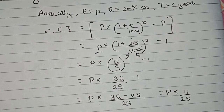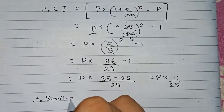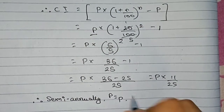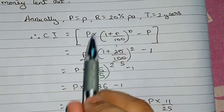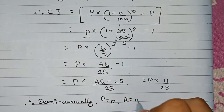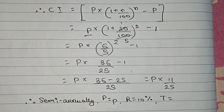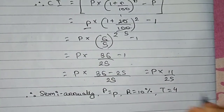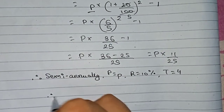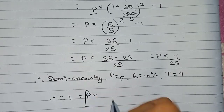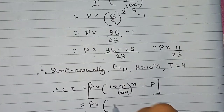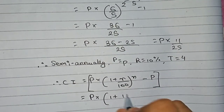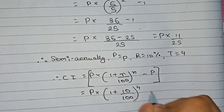Now let's find out the semi-annual compound interest. For semi-annual compounding, the rate becomes half: 20%/2 = 10%, and we multiply the time by 2, so 2 × 2 = 4. Therefore CI = P into (1 + 10/100) to the power 4, minus P. Taking P as common: P into [(11/10)⁴ − 1].